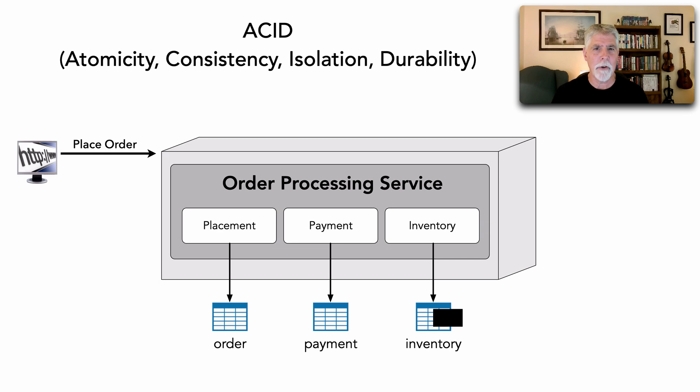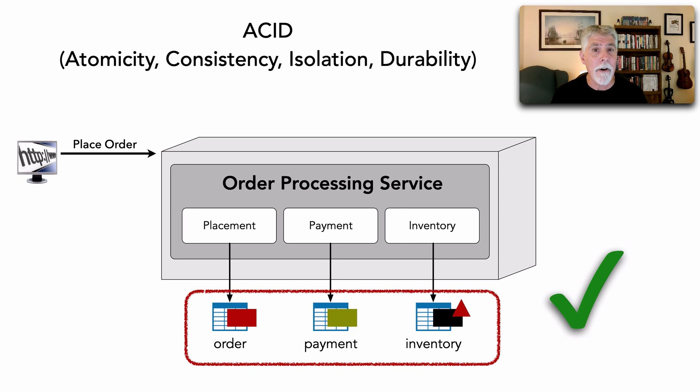When we talk about ACID transactions, these are transactions that we have within a monolithic system or a large service. For example, this order processing service - when I place an order I insert into the order, payment, and inventory tables. ACID transactions mean atomicity, consistency, isolation, and durability. First, the transaction is atomic - all of these updates occur or none of them occur. We're familiar with this through commits and rollbacks after database updates.